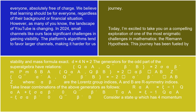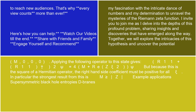Take linear combinations of the above generators as follows: R_α^a = (ψ^{-1}) Q_α^a + ψ σ_αβ^0 Q̄^{β b}, T_α^a = (ψ^{-1}) Q_α^a - ψ σ_αβ^0 Q̄^{β b}. Consider a state |ψ⟩ which has momentum (m, 0, 0, 0).